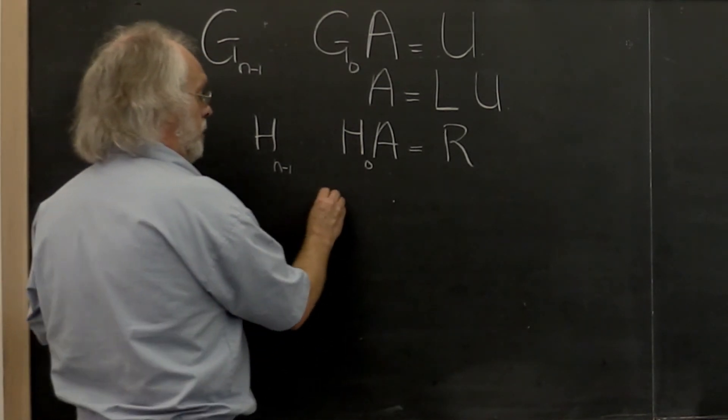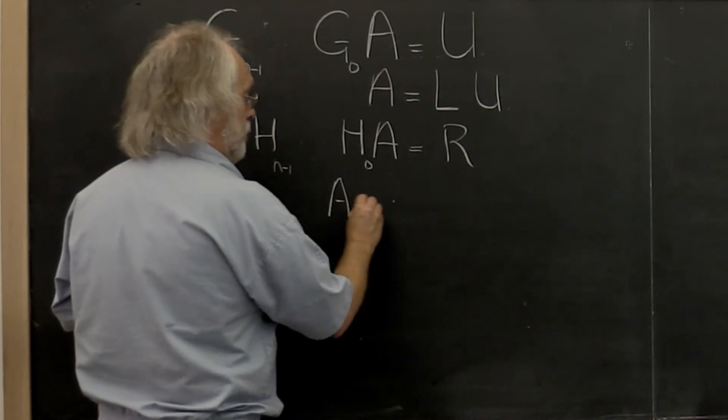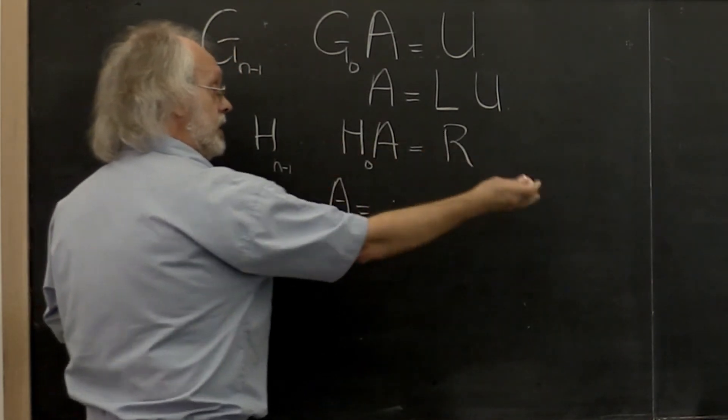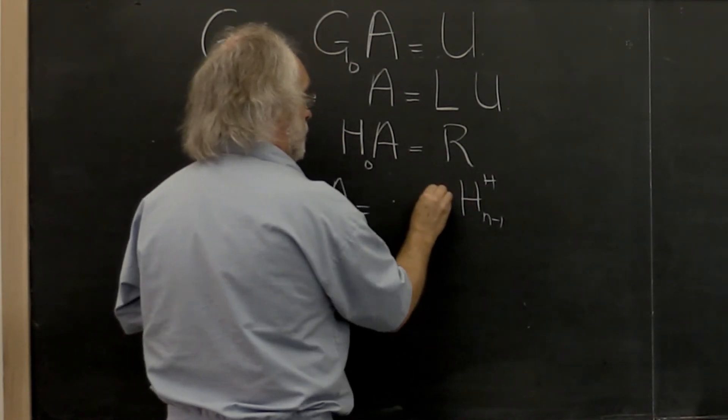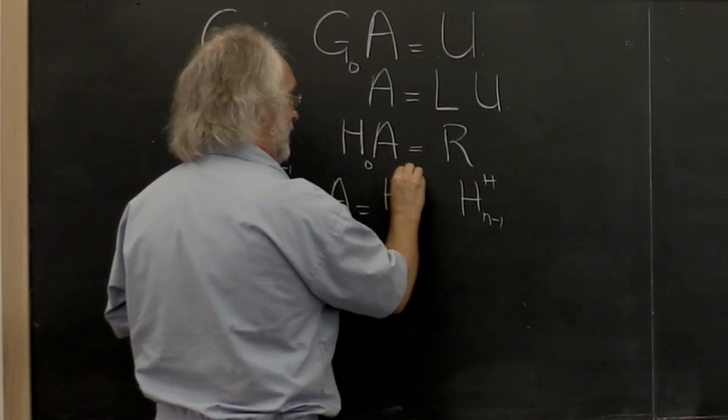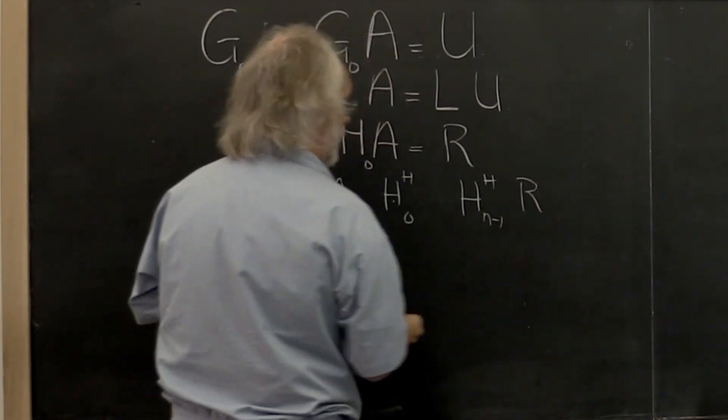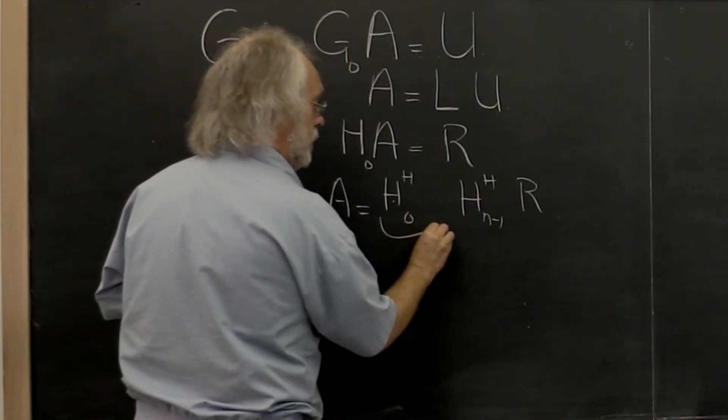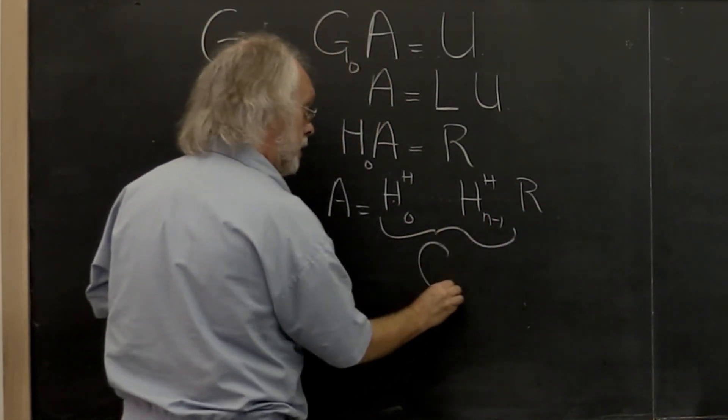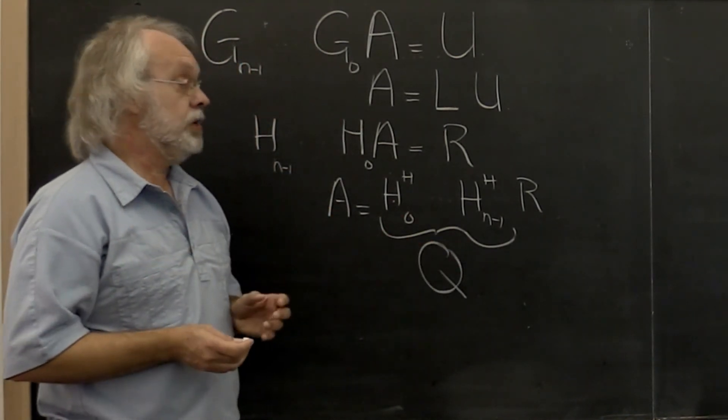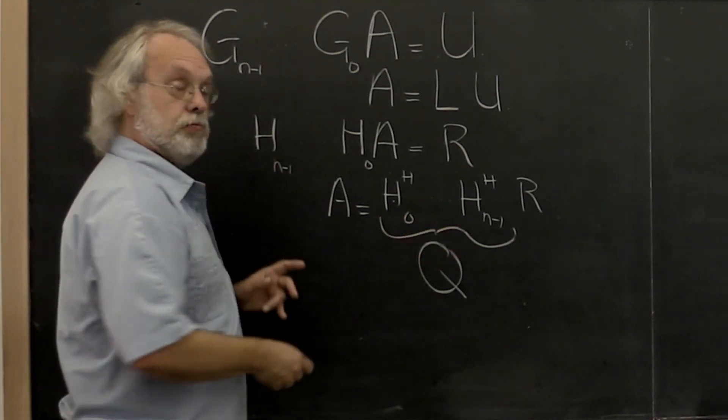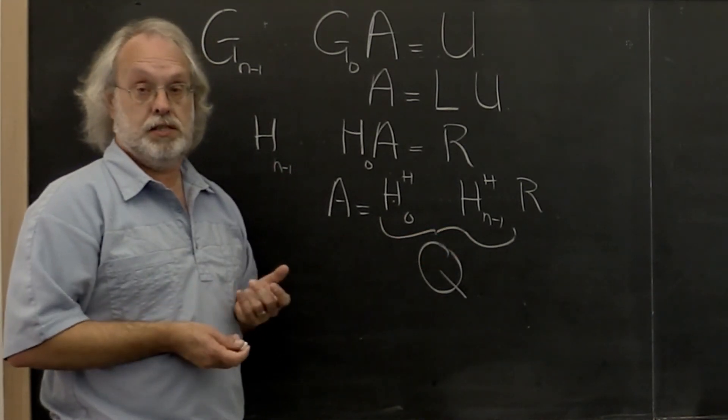What else do we know? We know that we could then bring all of those Householder transforms to the other side. So we could write this as this right here. And then again, these are unitary matrices. So if you multiply all of these together, we may end up with a unitary matrix Q. And then we have something that resembles our QR factorization.